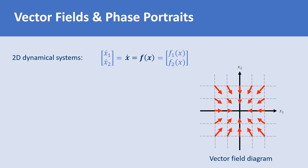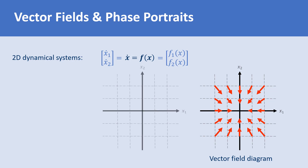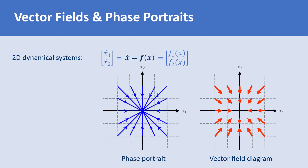We can construct the solution of this dynamical system starting at a given initial condition. We construct a trajectory by moving along the vector field at x0 and repeat this for the next points. The family of all trajectories is called the phase portrait of the system. Phase portraits contain trajectories of a system for a large number of initial conditions spread over the x1-x2 plane.